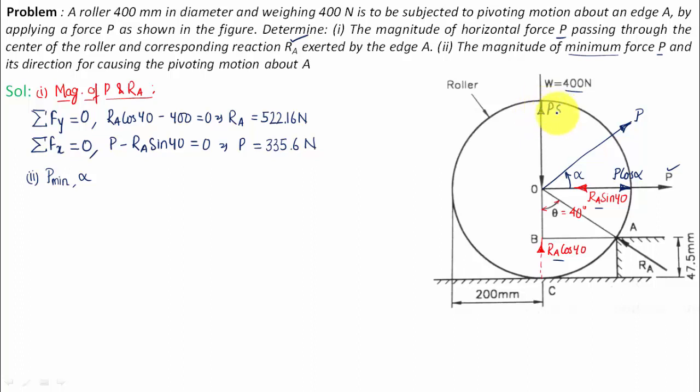So we have this first equation: summation of Fx is equal to zero. P cos alpha is towards the right hand side and hence positive. RA sin 40 is going to be negative since it is towards the left hand side. All of this is equal to zero, and here you can get the value of RA to be equal to P cos alpha divided by sin 40. I'm going to be using this value of RA.